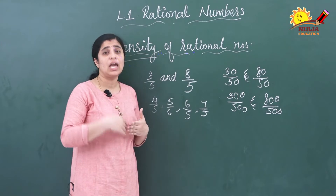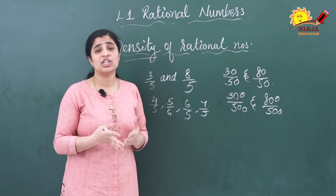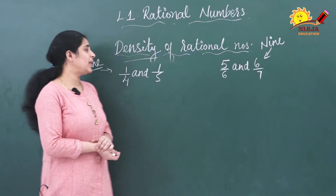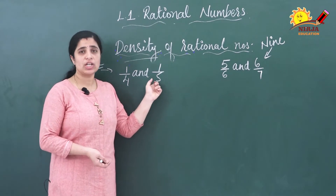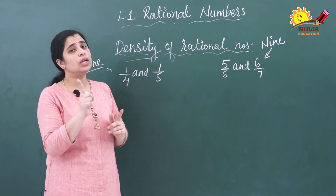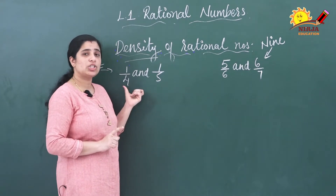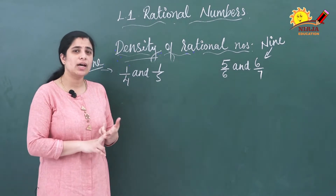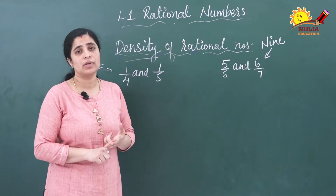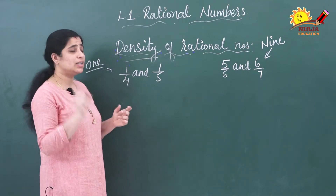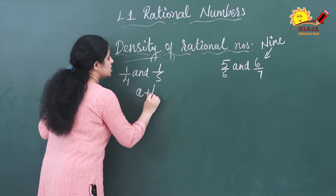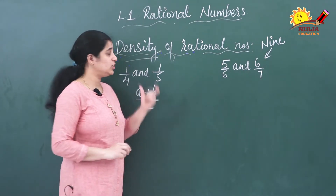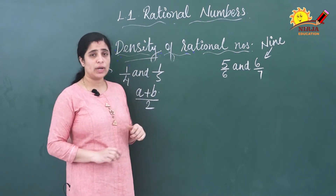Now we will see how we can find rational numbers between two given rational numbers. Suppose you have to find only one rational number between two rational numbers. There are two methods. There is a formula: (a + b) / 2, which is used for finding a rational number between two rational numbers.